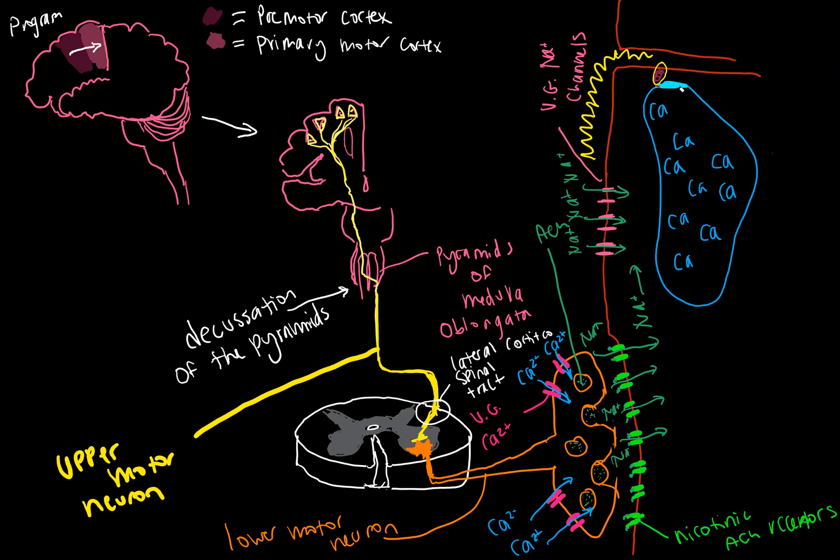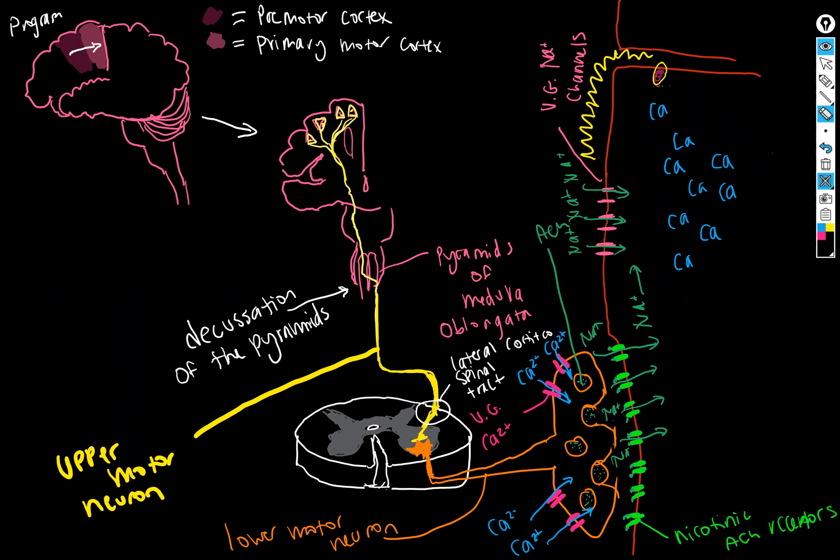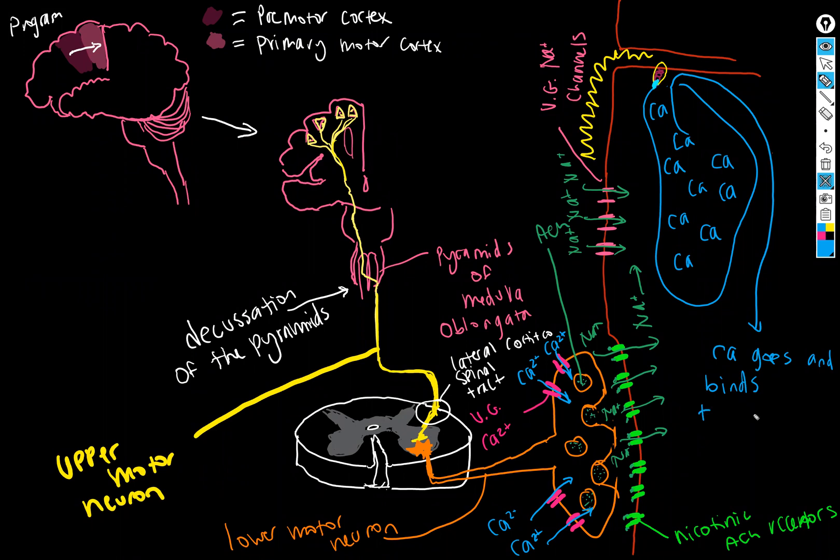And what that does is not make the sarcoplasmic reticulum disappear, although that would be crazy. What I was trying to do was utterly fail at drawing. There we go. So essentially the voltage sensor contracts and it opens the little calcium door and it lets the calcium out, and then the calcium can go and find troponin.